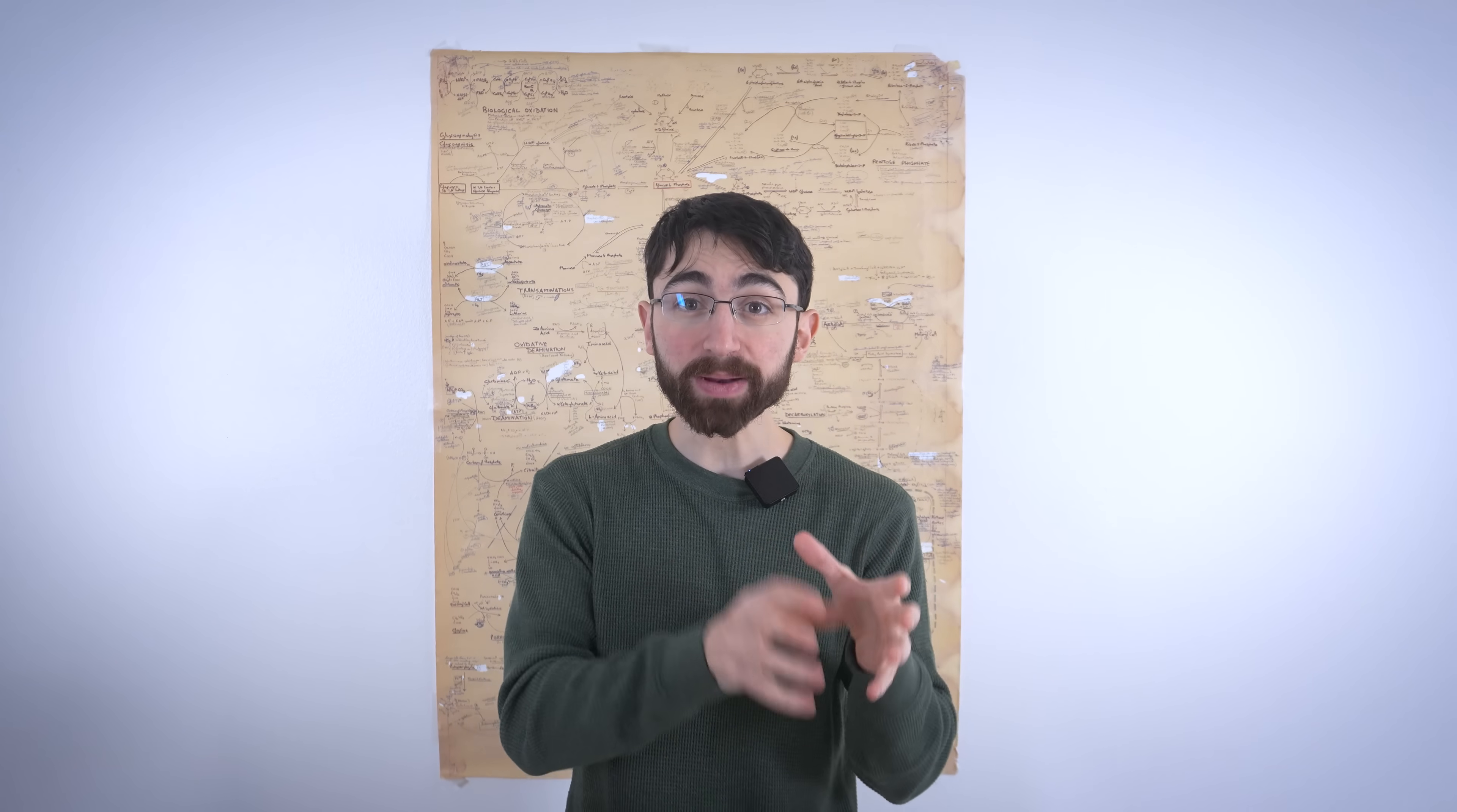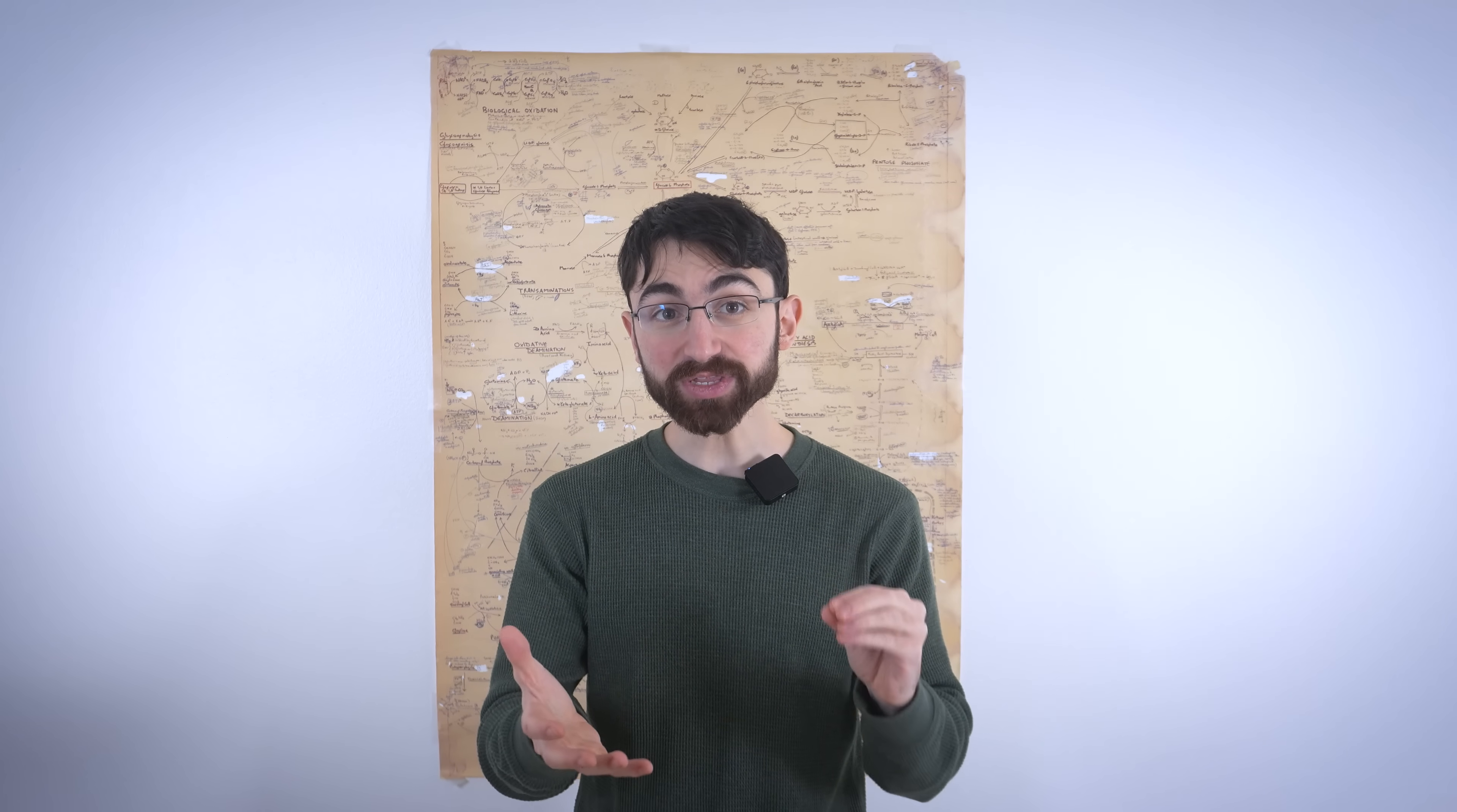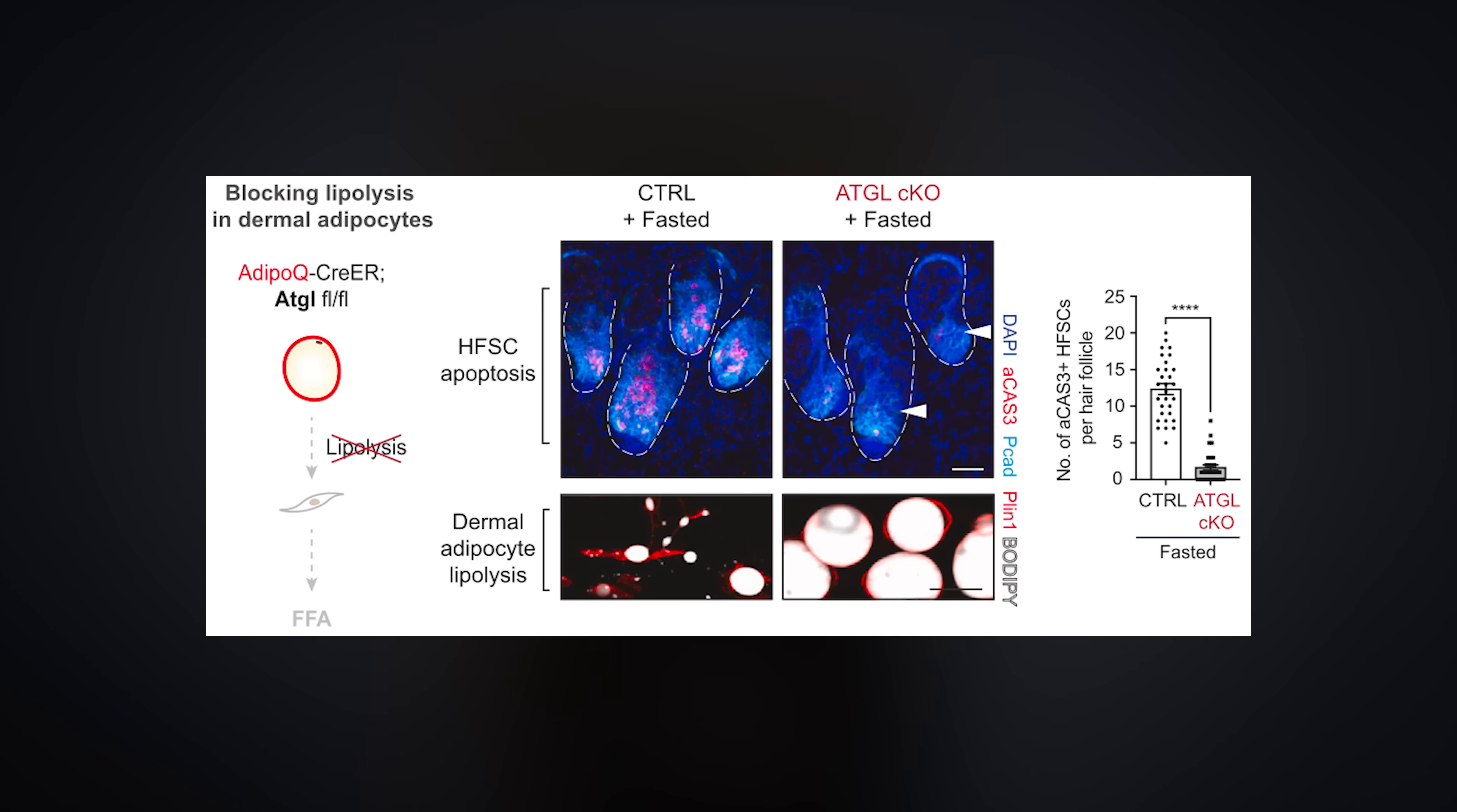Recall, earlier, I mentioned the metabolic niches. Well, the hair follicle stem cell niche includes fat cells in the skin, not under the skin, but in the skin, called dermal adipocytes. And during fasting, dermal adipocytes break down stored fat to release free fatty acids. And release these free fatty acids into the niche at an alarming rate, leading to local fatty acid levels in the skin that far exceed those in the blood. And when the researchers knock out a key enzyme in these skin fat cells, the dermal adipocytes, responsible for fat burning,